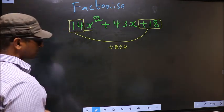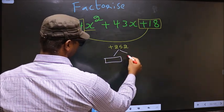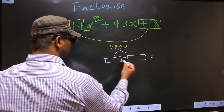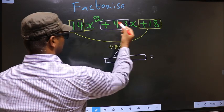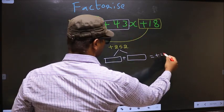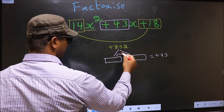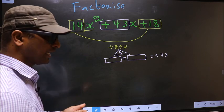Next, now you should look out for 2 numbers such that when you add these 2 numbers, you should get the middle coefficient, that is +43, and also when you multiply them, you should get +252.